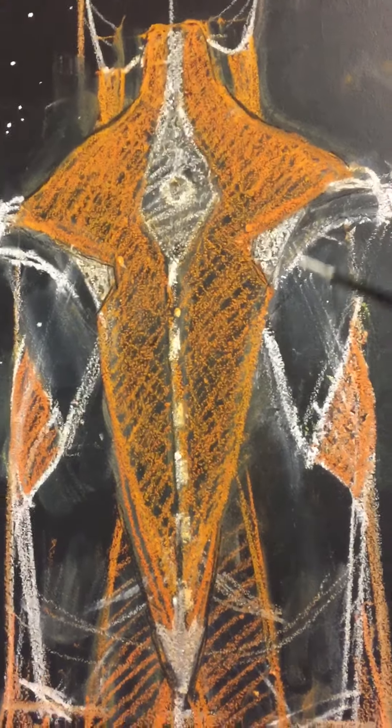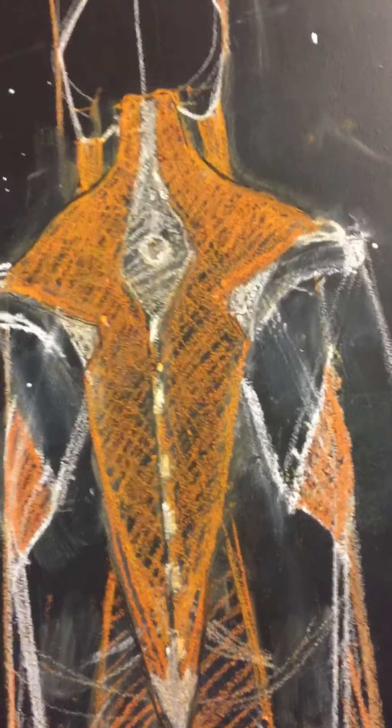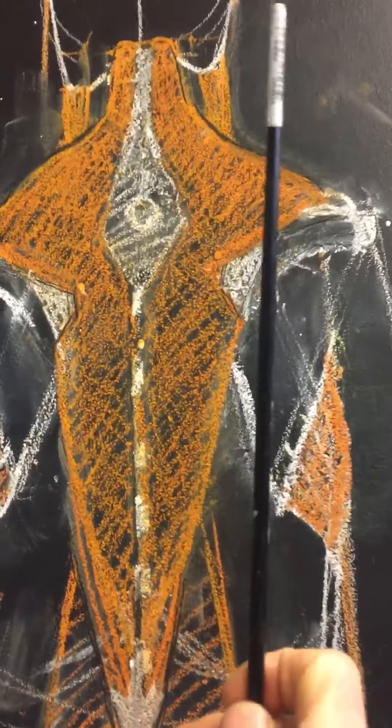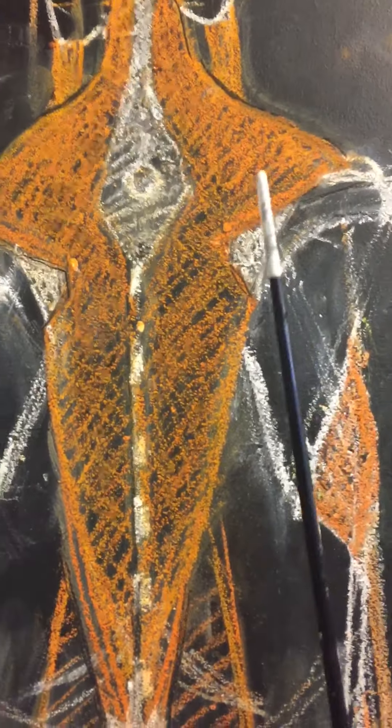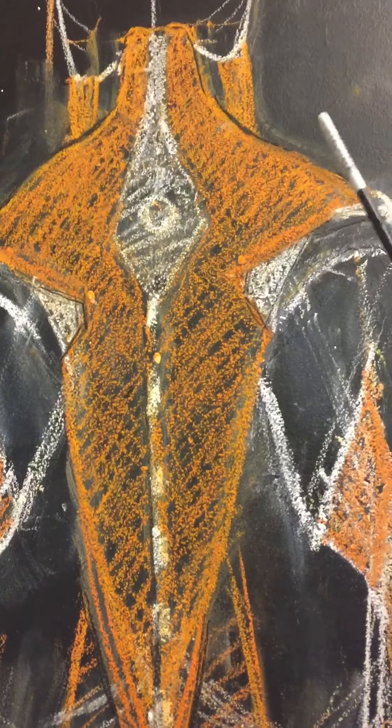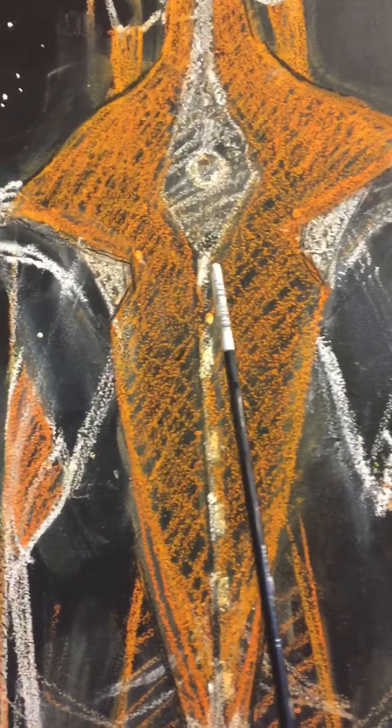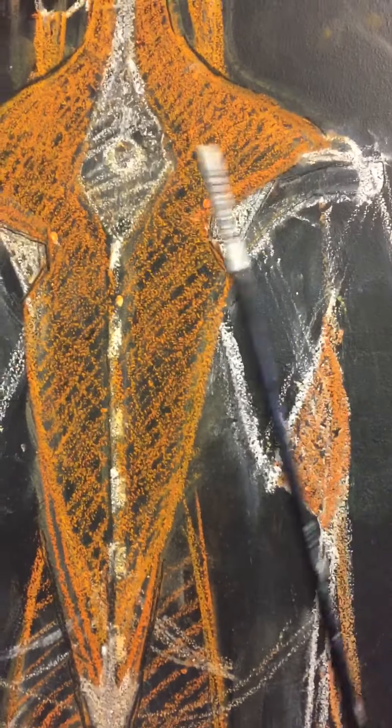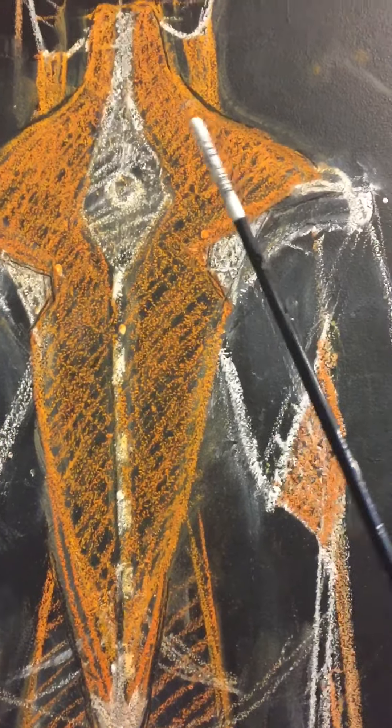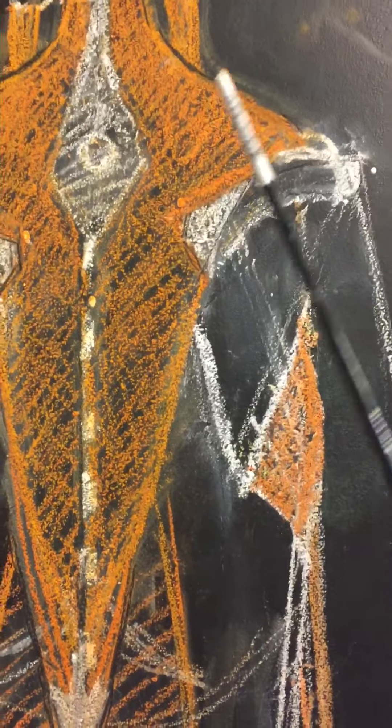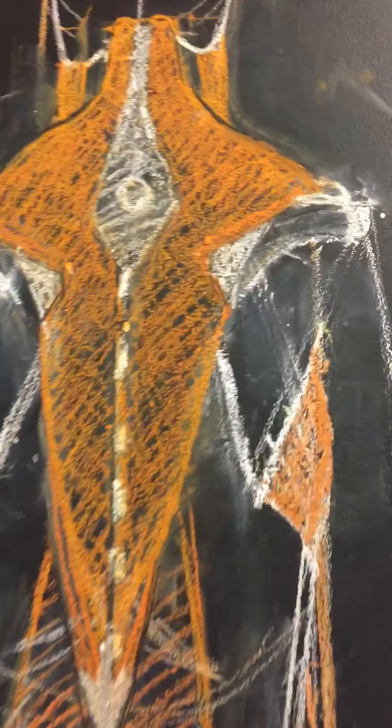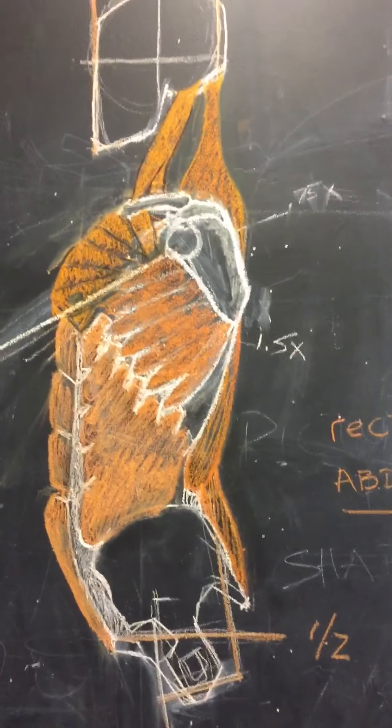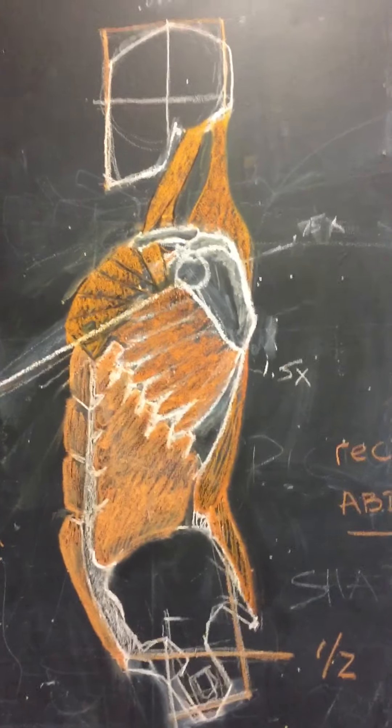So when these muscles contract it helps turn the scapula, pulls it this way. These top fibers can lift it up, the middle fibers pull it medially like this way, and then the bottom fibers can pull it down. But the big action is rotating, helping to rotate the shoulder and the arm like this. Okay, and that's the trapezius.